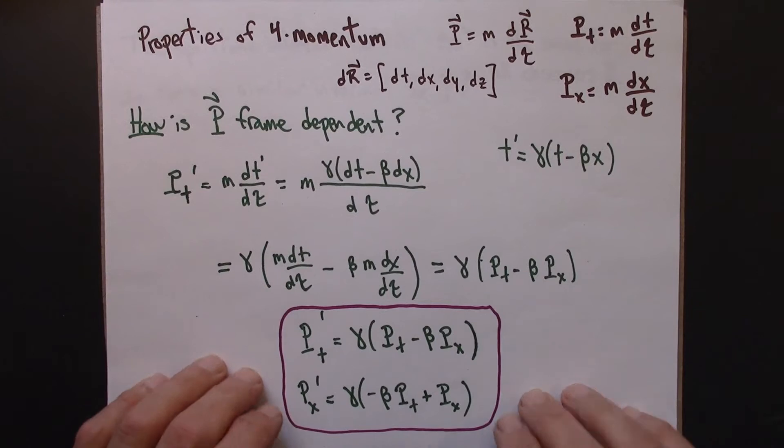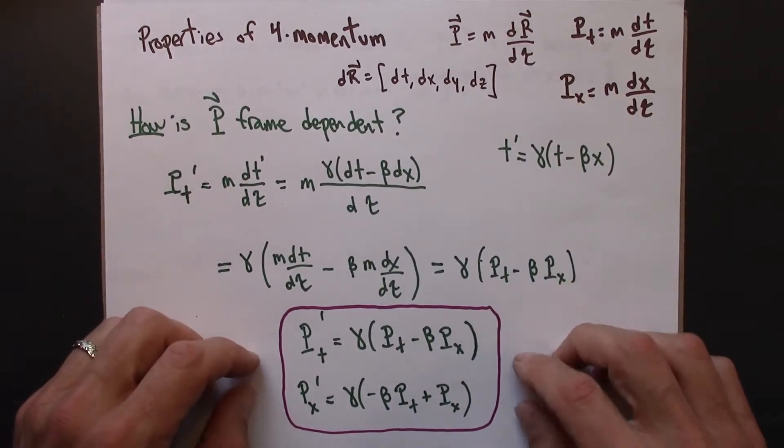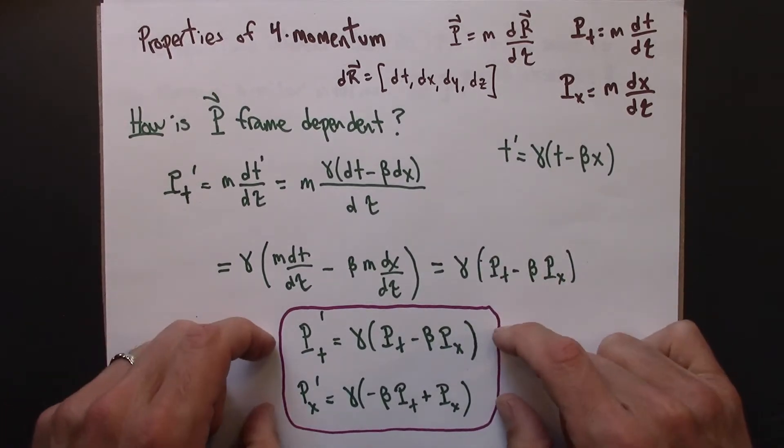In the previous video, we saw that form momentum transforms in the same way as space-time coordinates transform according to the Lorentz transformations.